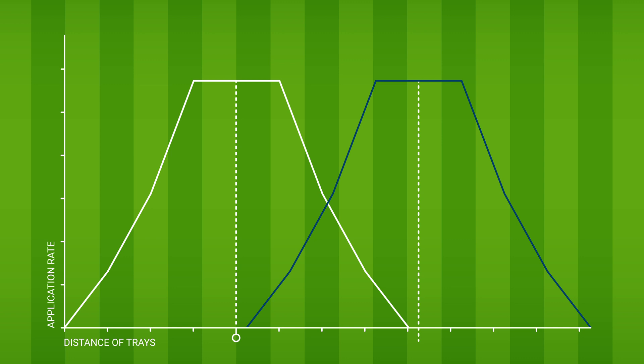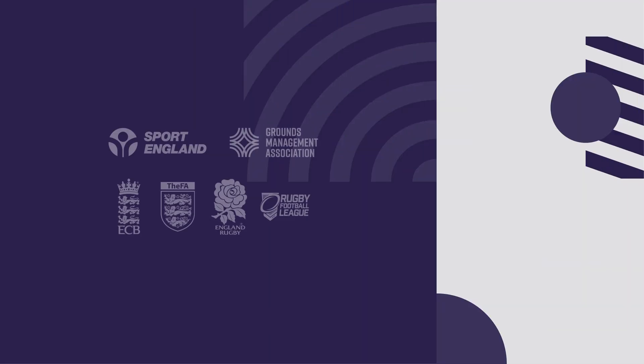To do this, simply add up the total from the two overlapping lines on the graphs. If the total application rate achieved is not close to your target rate, you will need to adjust the metering mechanism accordingly and repeat the calibration process.